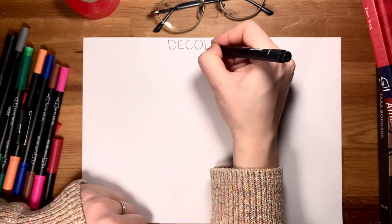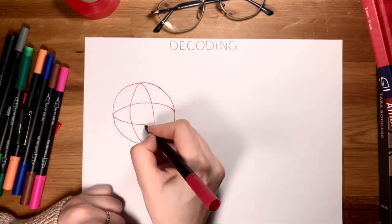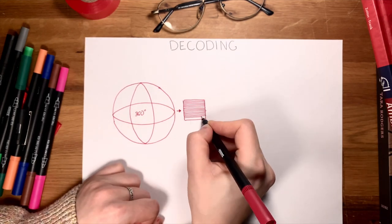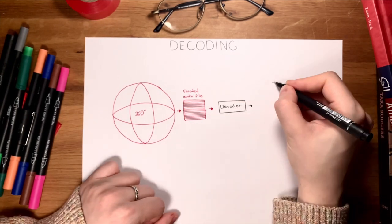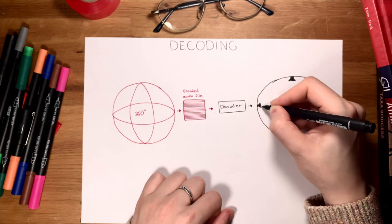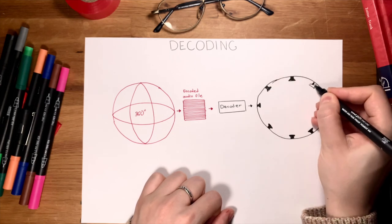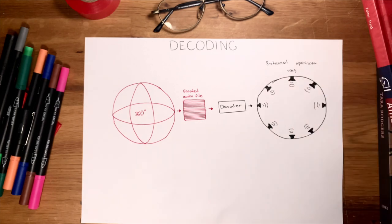Decoding is when all the encoded channels are sent to the speaker array for playback. One of ambisonics' most significant advantages is that encoded audio channels do not correspond to speaker feeds, meaning we can decode the same encoded file to different numbers of loudspeakers. For example, a 36-channel sound file can be played back with eight loudspeakers. However, fitting a low-order encoded file to higher-order decoders will result in a spatial blur.